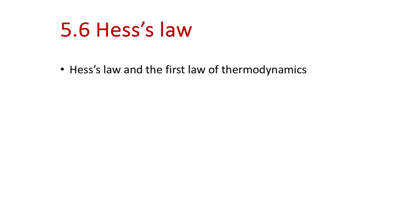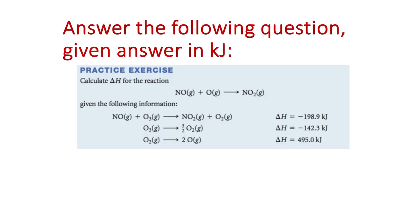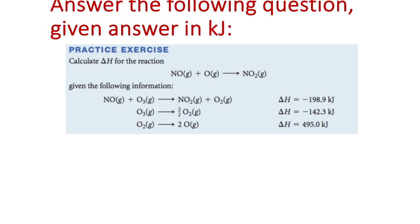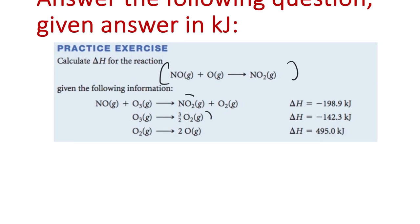Hess's Law: we can take reactions and add them together to get new reactions, and just add up their enthalpies. For example, to find ΔH for NO + O → NO₂, we're given: (1) NO + O₃ → NO₂ + O₂, ΔH = −198.9 kJ; (2) O₃ → 3/2 O₂, ΔH = −142.3 kJ (reversed: +142.3 kJ); (3) O₂ → 2O, ΔH = +495 kJ. Think of it as a puzzle — find how to manipulate these equations to obtain the desired reaction.